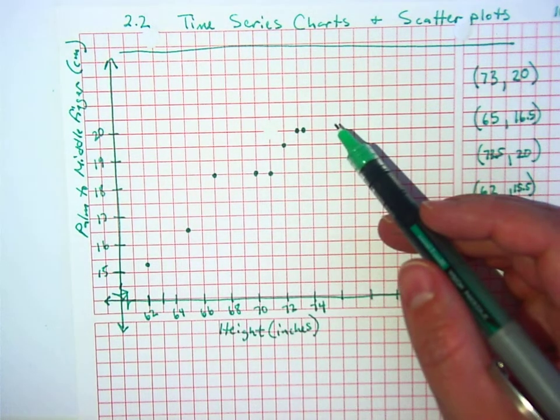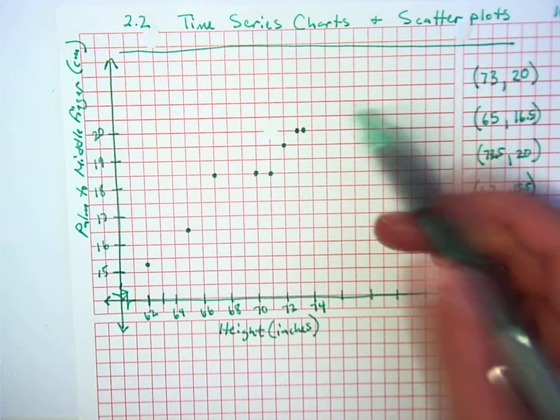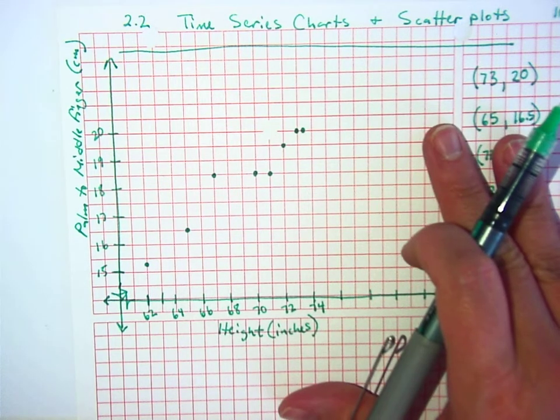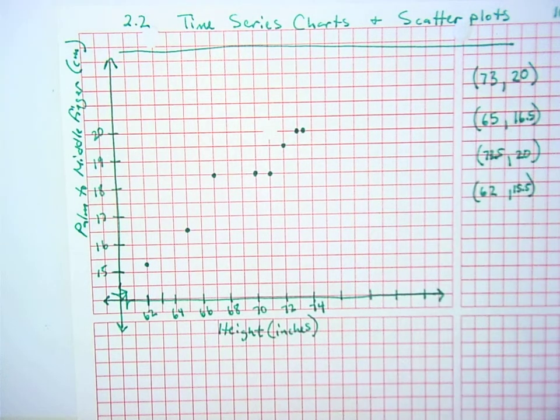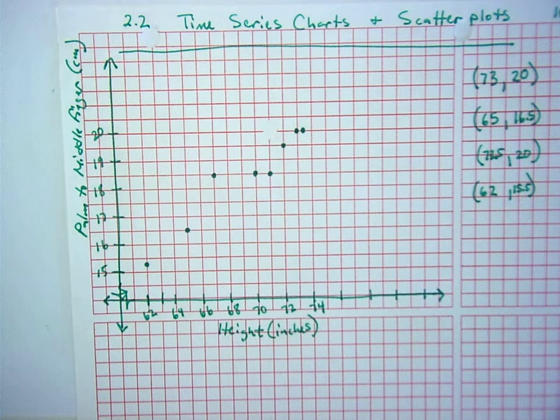What would a negative correlation look like? It'd be going downhill. And what would no correlation look like? No, it'd be like scattered. It would just be like, you'd see no pattern.